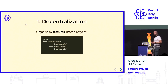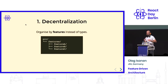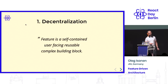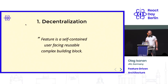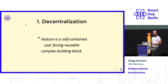My suggestion: what if we use features as the thing to split our application into chunks? Instead of types of code — a component is a type — a feature is something that is user-facing. A feature is a self-contained, user-facing, reusable, complex building block. It's self-contained because it contains everything it needs. It's reusable because it can be used on different pages or screens. It's complex because it's a more high-level abstraction than a component. Our application can be split into: pages or screens, which have features, which have components, which can use utilities or libraries.